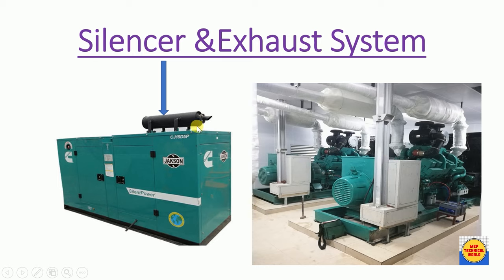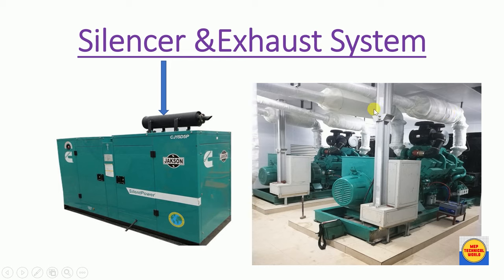Next is the silencer and exhaust system. The silencer is located at the top of the DG. It is part of the exhaust system where exhaust gases, burnt gases, and smoke are filtered. The DG then exhausts the smoke or burnt gases from the stack.